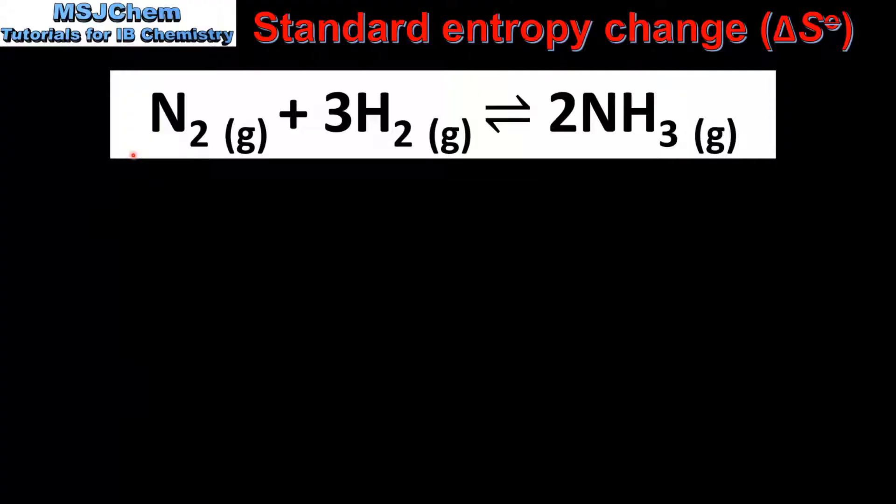In our next example we'll calculate the standard entropy change for the Haber process. In the Haber process nitrogen and hydrogen react together to form ammonia.